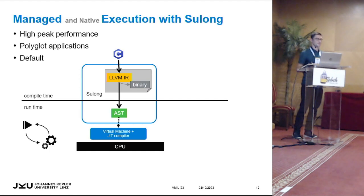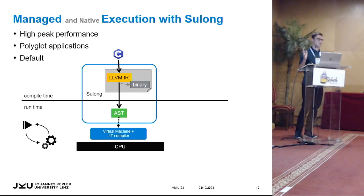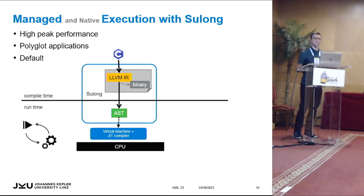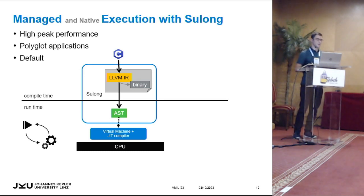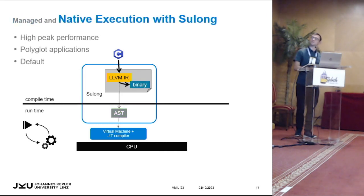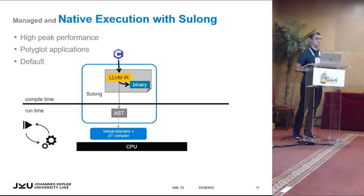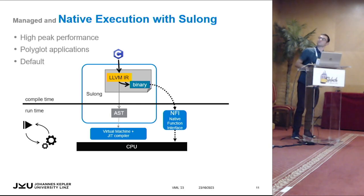The GraalVM JIT compiler is highly aggressively optimizing, so we get really good peak performance. Since we live within the Truffle framework, we almost automatically get the ability to run polyglot applications — it's really easy to call code parts of other languages. This is currently the default way to execute C code on GraalVM. On the other hand, we have native execution.